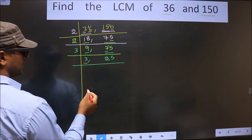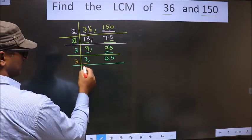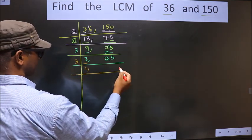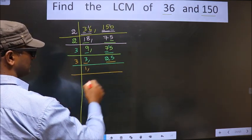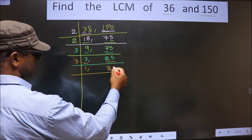Now here we have 3. 3 is a prime number, so we take 3 once. The other number is 25. 25 is not divisible by 3, so you write it down as it is.